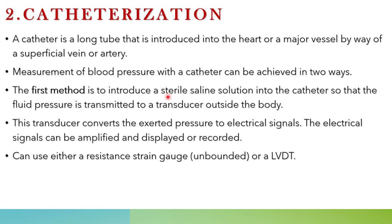In the first method of catheterization, a sterile saline solution is introduced into the catheter, and based on the fluid pressure changes, a transducer outside the body senses the fluid pressure difference and converts that pressure into an electrical signal. The electrical signals can be amplified and displayed or recorded. The transducer used is either a resistance strain gauge unbounded transducer or an LVDT (Linear Variable Differential Transducer).